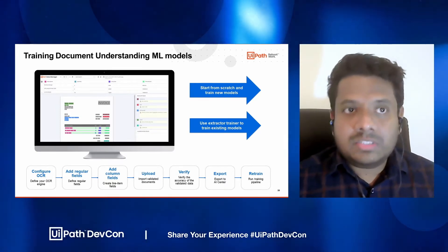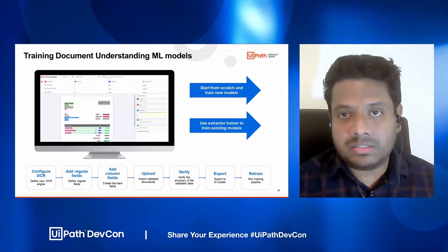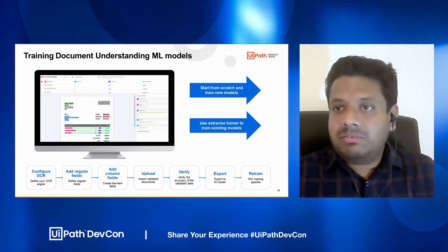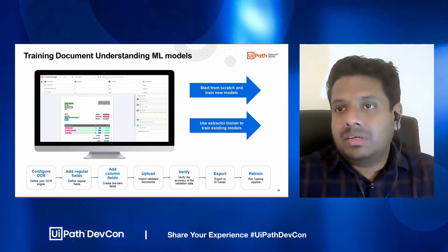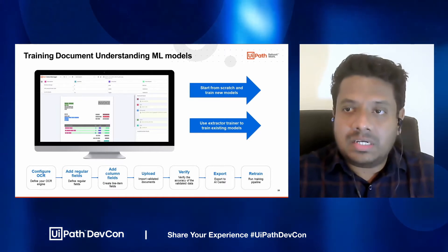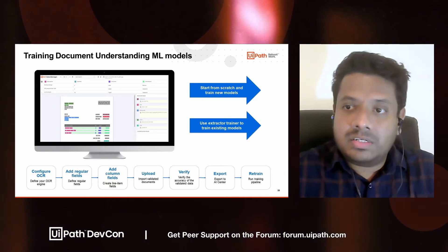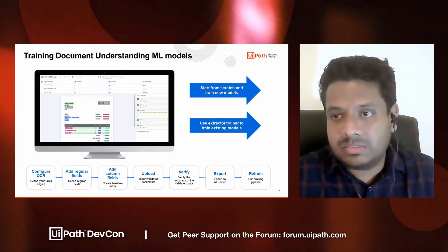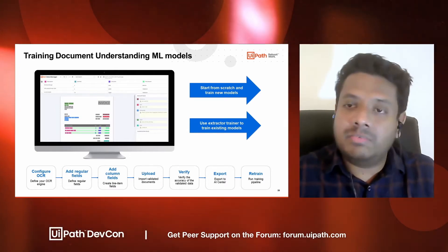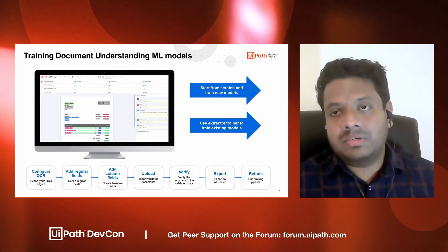In UiPath, we use a tool named Data Manager that comes as part of AI Center under data labeling to train the models. We have two approaches to train the existing models. The first is to start from scratch and build your new model. The second is to use the data generated through the extractor train activities in existing Document Understanding workflows and use that data to train the model. Whatever approach you take, the steps you need to follow are almost the same.